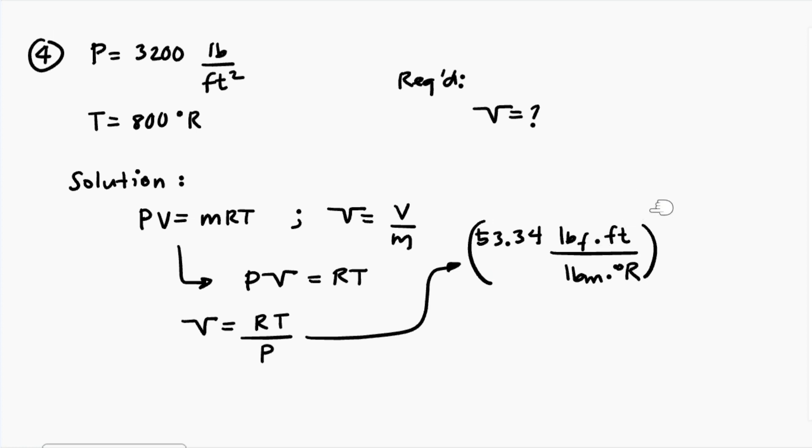And then we have temperature absolute which is 800 degree Rankine, and then at the bottom we have our pressure of 3200 pound force per square foot. Look at the unit cancellation: degree Rankine cancels, pound force cancels, and the square foot rises to become cubic feet. Therefore your final unit is cubic feet per pound mass.